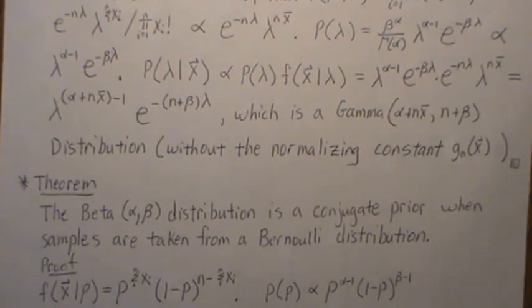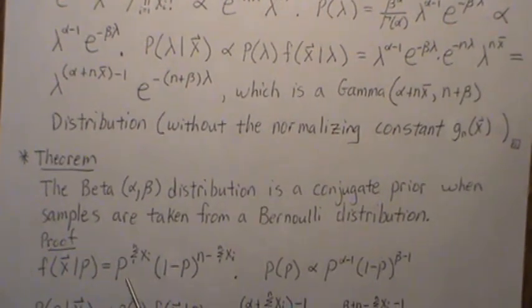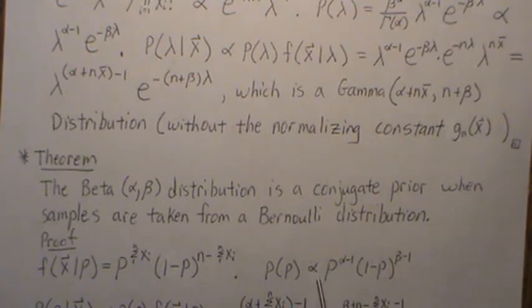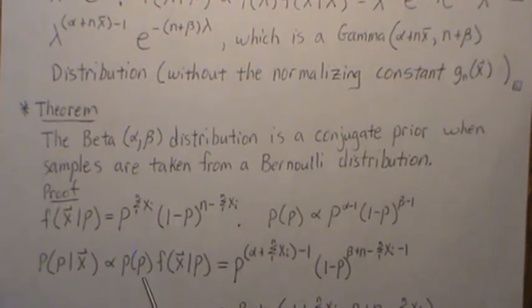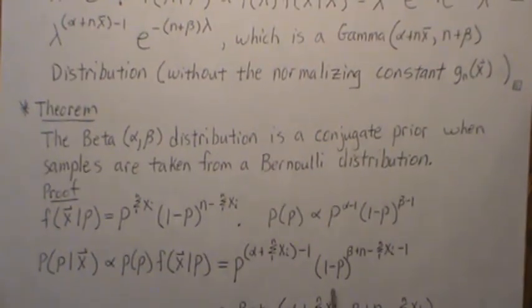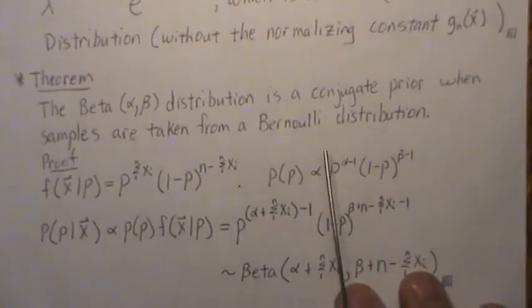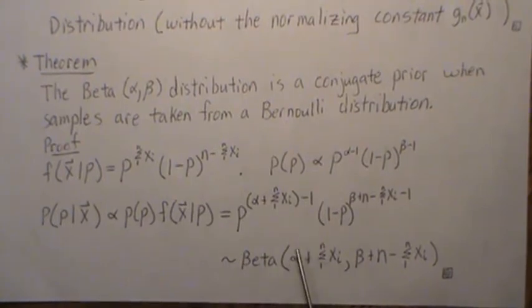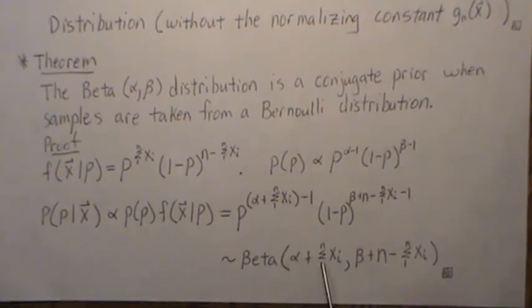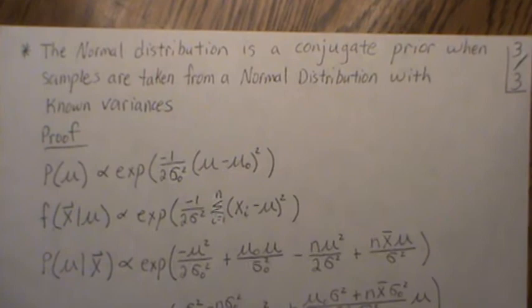Theorem two: the beta distribution is a conjugate prior when samples are taken from a Bernoulli distribution. The likelihood function for Bernoulli is proportional to p raised to the sum of X's times one minus p raised to n minus the sum of X's. The prior follows a beta distribution, and dropping the constants we say it's proportional to that form. The posterior distribution is the prior times the likelihood. Combining the exponents on p and on one minus p, we get a form that's exactly a beta distribution, with updated alpha and beta parameters.